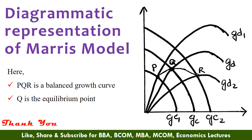Before closing this lecture session, let us summarize the Marris model. As Marris told that there should be balanced growth, combining the previous figures, we get this figure. On joining PQR, we get the balanced growth curve. The point Q, where the balanced growth is highest, is the equilibrium point.